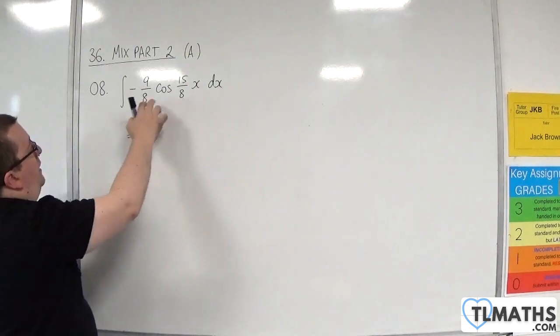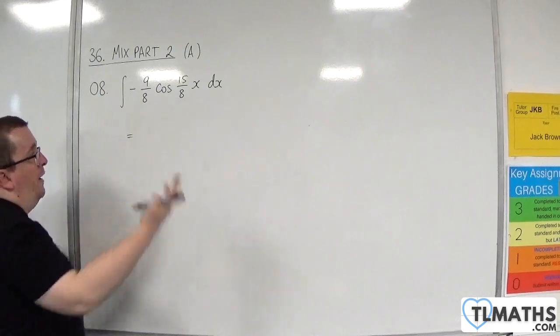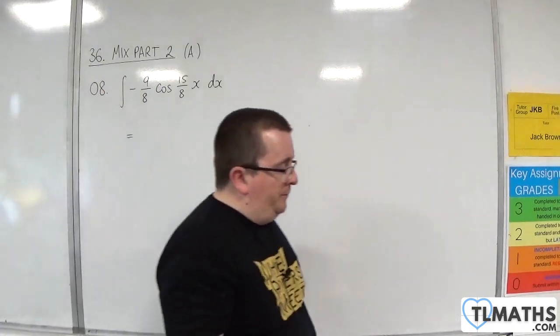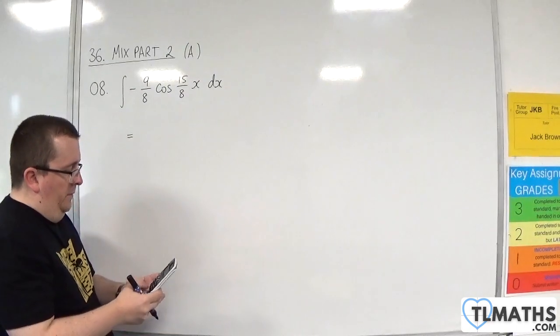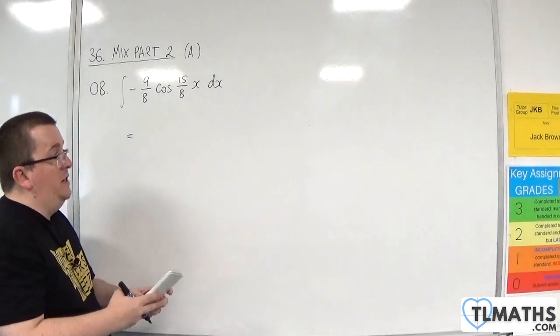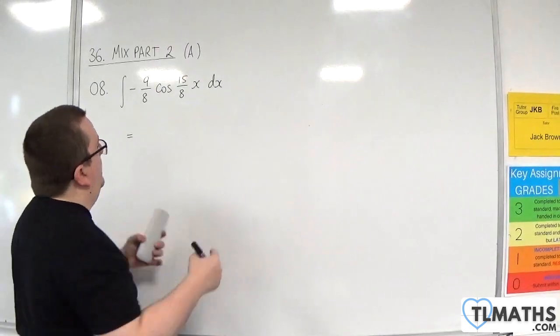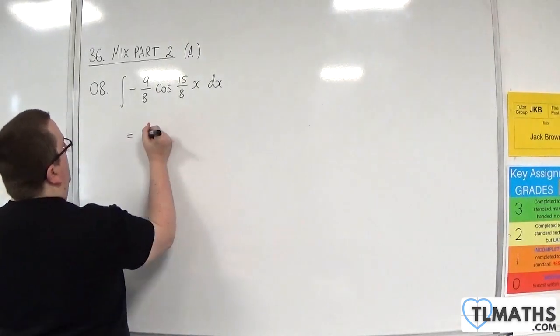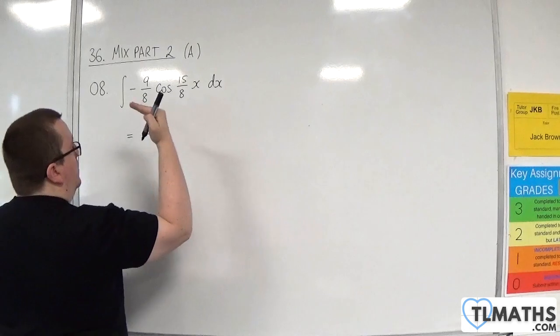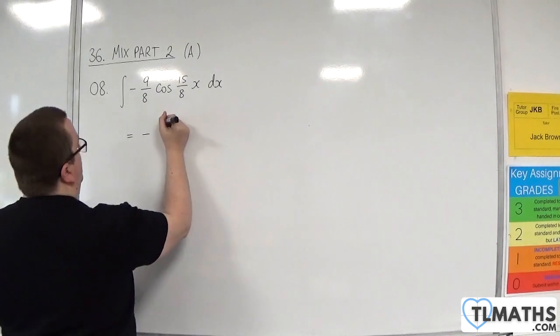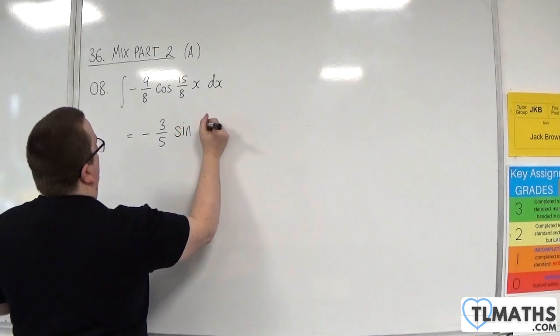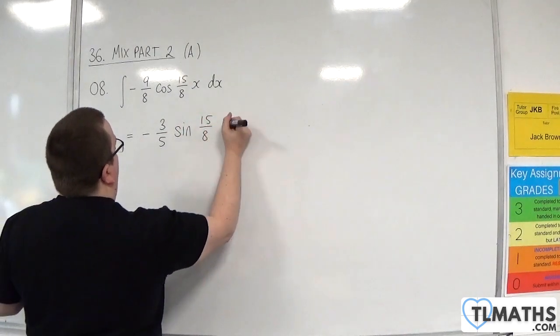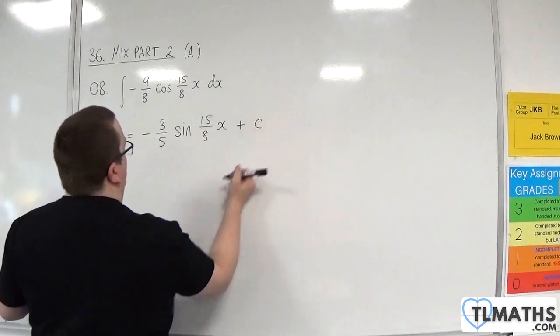So what we'll do is we'll do 9 eighths divided by the 15 eighths. So divide it by the coefficient of x and we get 3 fifths. We've still got the minus because minus cosine goes to minus sine. So minus 3 fifths sine of 15 eighths x plus a constant c.